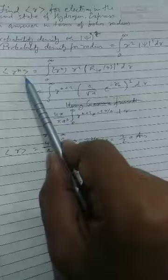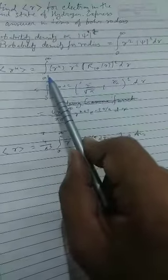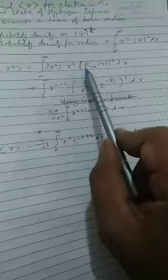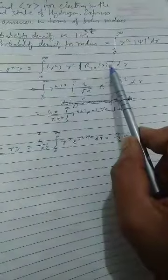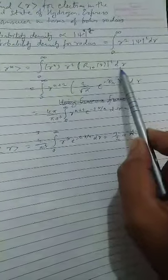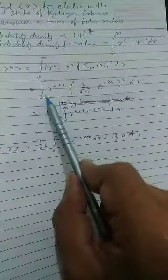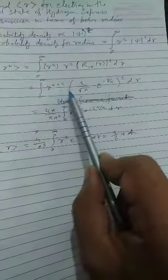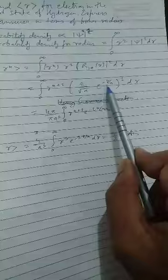The expected value of R to the power N is equal to integration of 0 to infinity for R to the power N into R square R_10 R in the mod with the square dR, which is equal to integration from 0 to infinity R^(n+2) times 2 by root A e to the power minus R by A square dR.